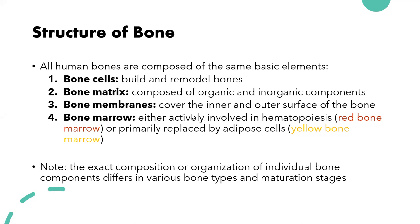The structure, composition, and organization of bone changes depending on the type of bone you're looking at and the maturation stage. For example, newly developed bone won't have the same components as bone that is two months old. Similarly, an infant's bones are going to be structurally different from an adult's. It's important to keep in mind that bone composition can change depending on bone type and maturation stage.